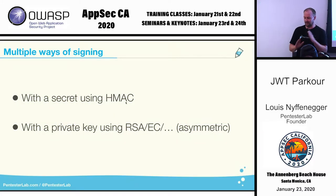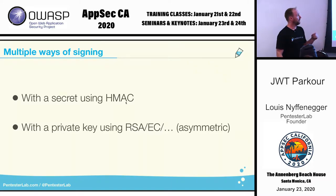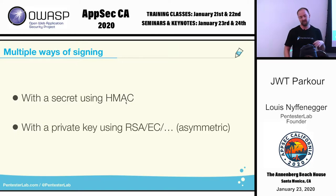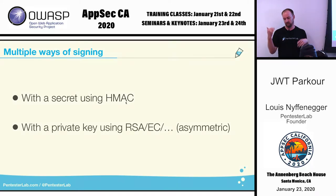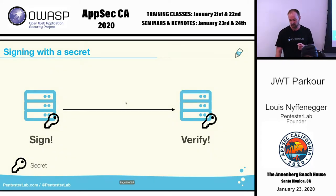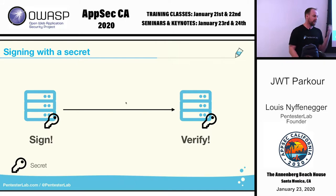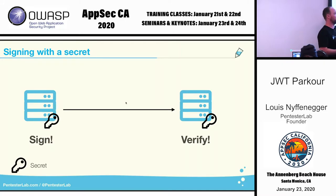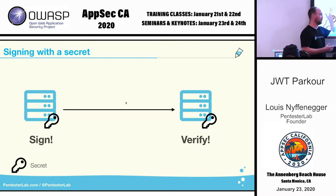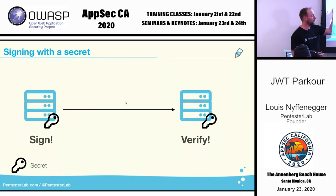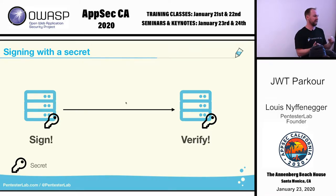When you want to sign information, you can sign with a secret using HMAC, or you can sign with a private key using RSA, EC, or something similar — symmetric versus asymmetric ways of signing. If you sign with a secret, both parties — the creator of the information and the person verifying — need that secret to verify the integrity of the data.